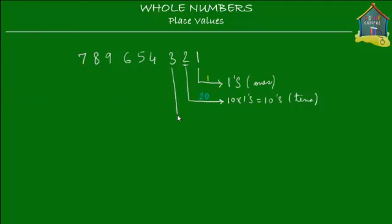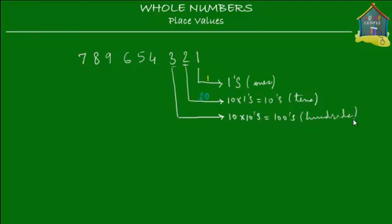How about 3? Well, 3 is in a place that's 10 times more important than the 10's place, because it's one place to the left of the 10's place. So it's in the 100's place — 10 times 10 is 100. So this is the 100's place. The value of 3, since it's in the 100's place, is 3 times 100, and 3 times 100 is 300.